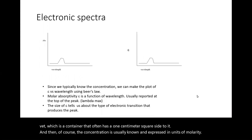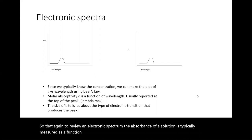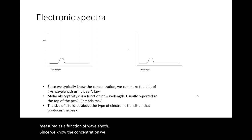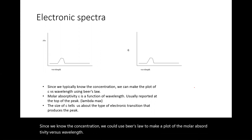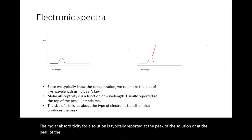To review an electronic spectrum: the absorbance of a solution is typically measured as a function of wavelength. Since we know the concentration, we can use Beer's Law to make a plot of molar absorptivity versus wavelength. The molar absorptivity is typically reported at the peak of the absorbance, because it is a function of wavelength.